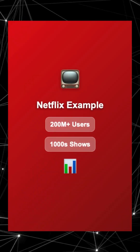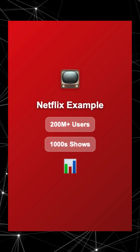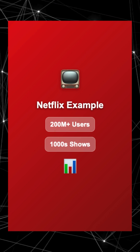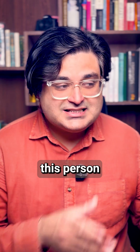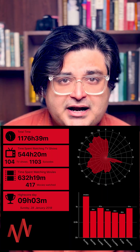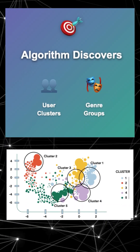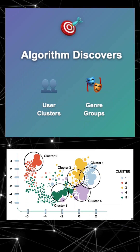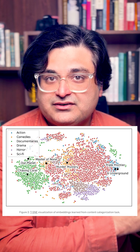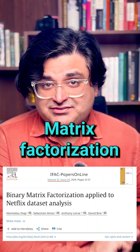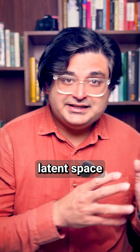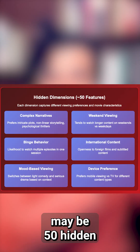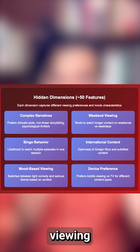Take Netflix's recommendation system. They have viewing data from more than 200 million users across thousands of shows — no labels saying this person likes to watch rom-coms, just raw viewing patterns. The algorithm discovers that users naturally cluster into taste profiles and shows cluster into genre archetypes. Using matrix factorization or autoencoders, Netflix finds a latent space — maybe 50 hidden dimensions — that captures viewing preferences.